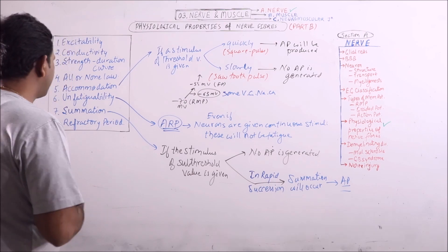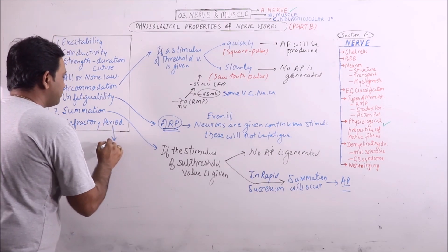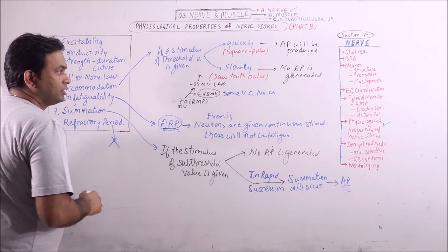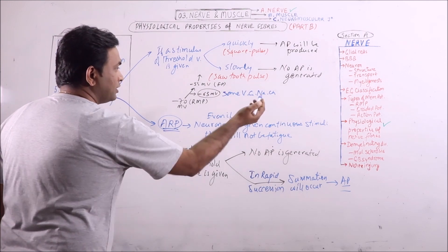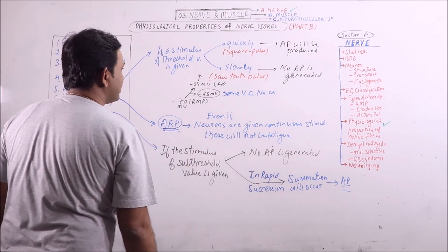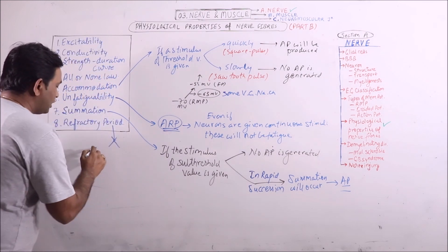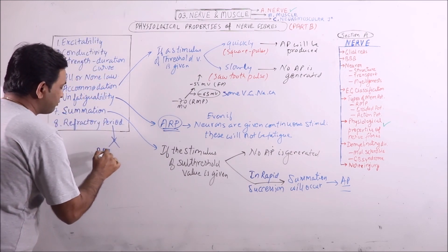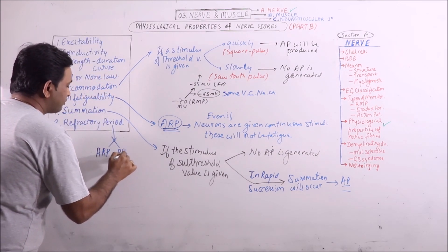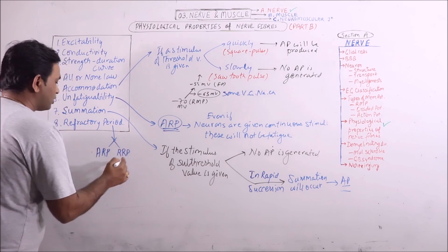And the last property is refractory period. We have discussed the refractory period in detail in the previous lectures on membrane potential in nerve fibers. And we know that these are of two types: absolute refractory period and relative refractory period.